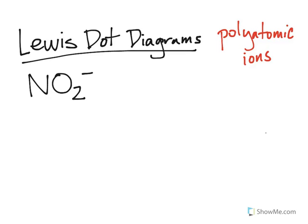Welcome back to Science with Go. Today we're going to take another look at Lewis dot diagrams and another example of polyatomic ions and their drawings. Let's take a look at something a little more complicated: NO2 minus, the nitrite ion.